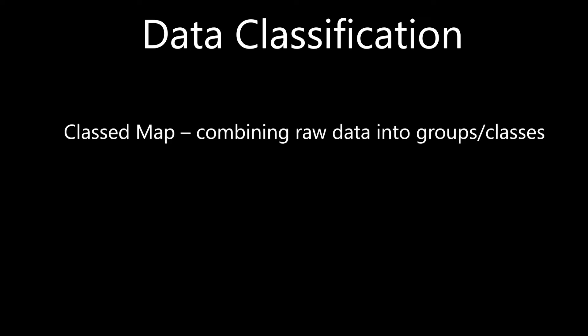Before we start, I just wanted to briefly mention two general ideas about data classification in thematic maps. The first is the idea of a classed map, where raw data values are first assigned to groups or classes, and in turn those classes are then depicted on a geographic map.